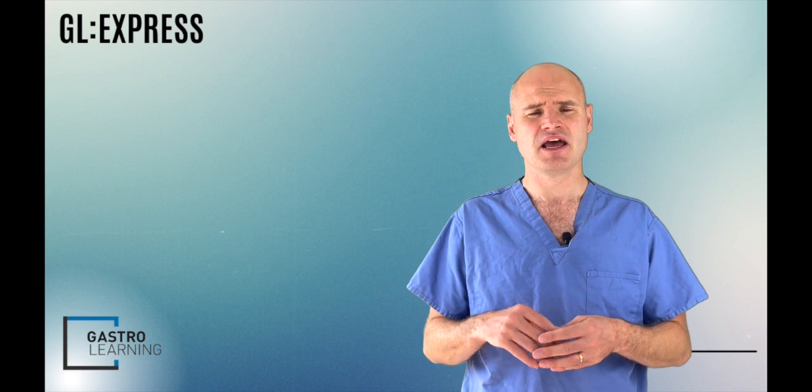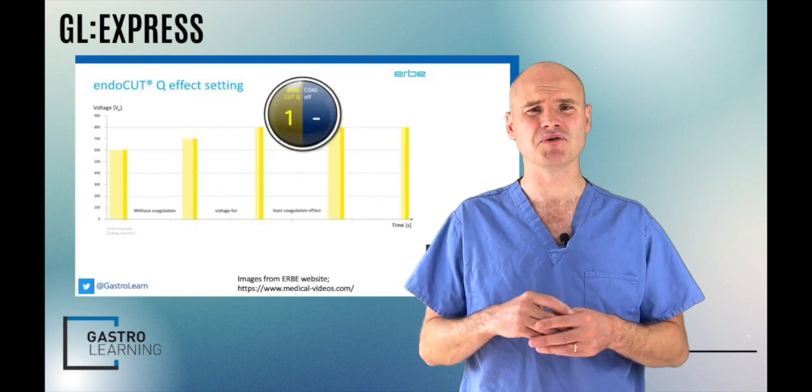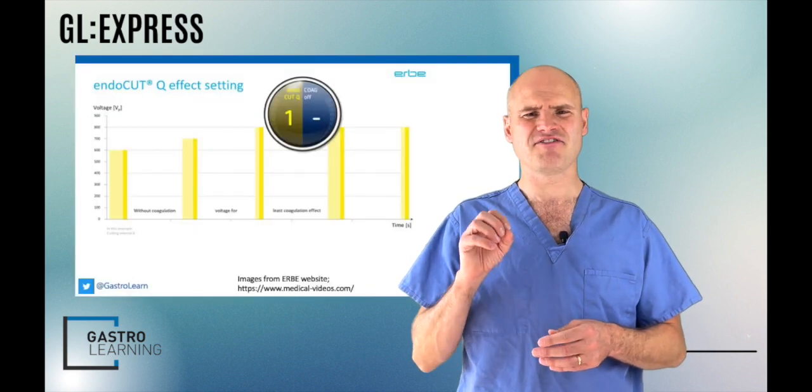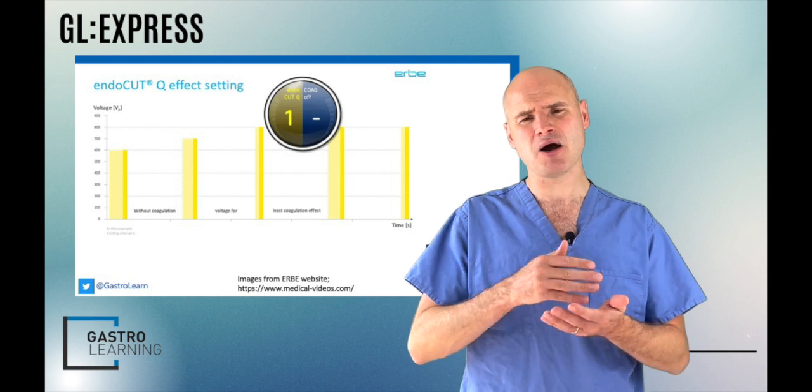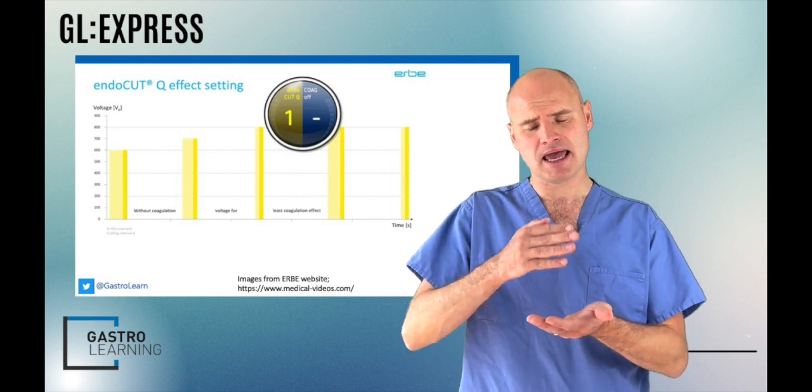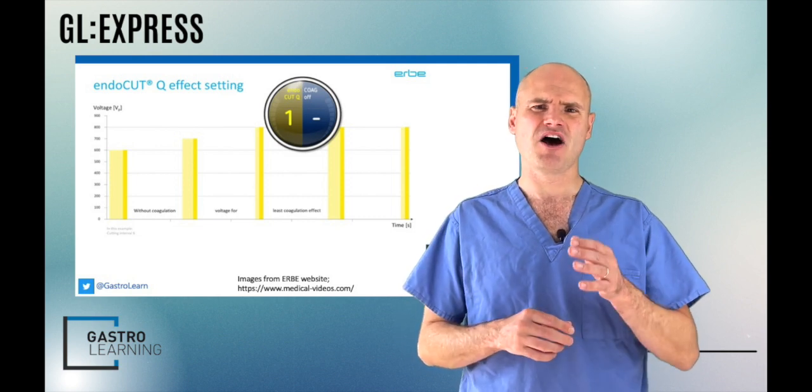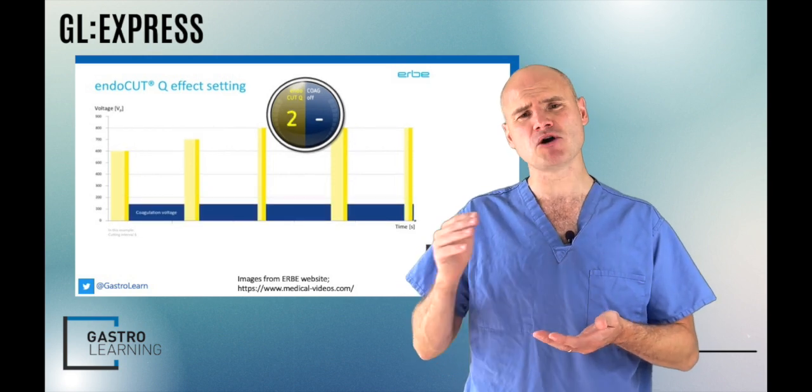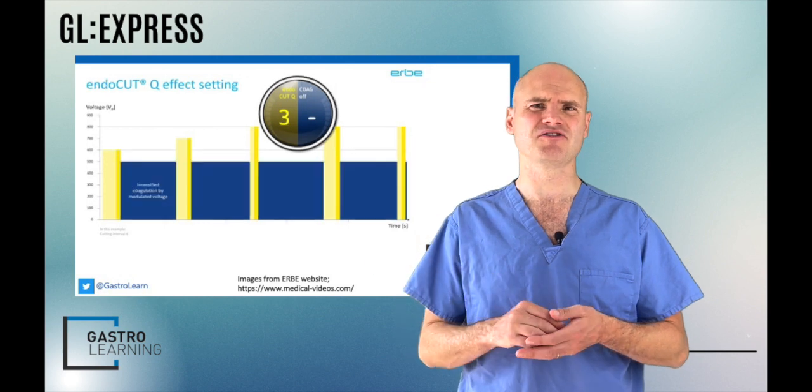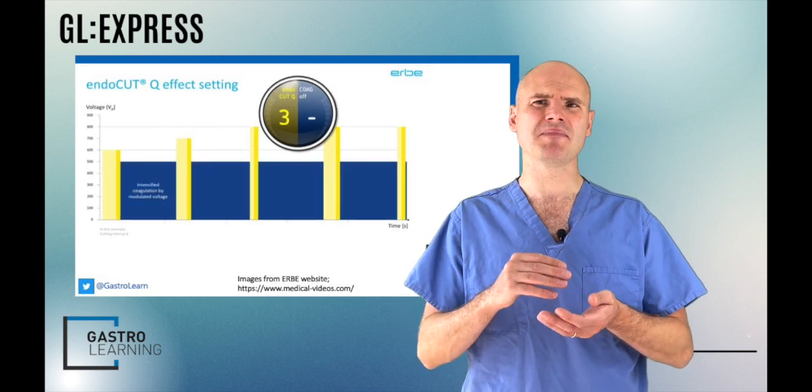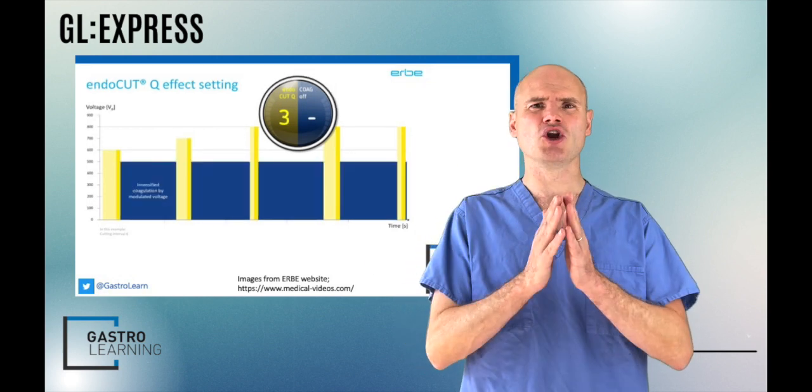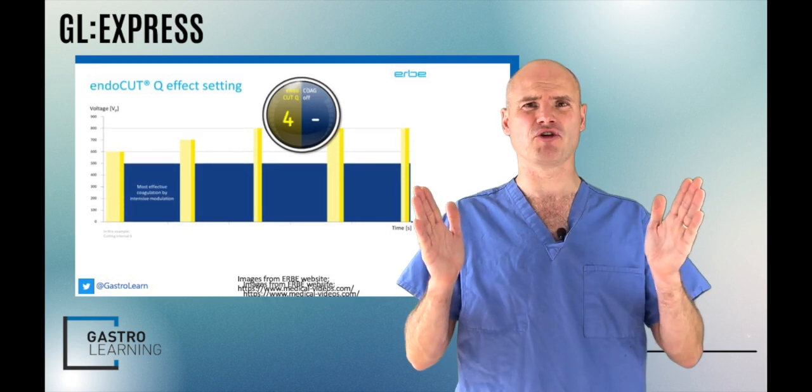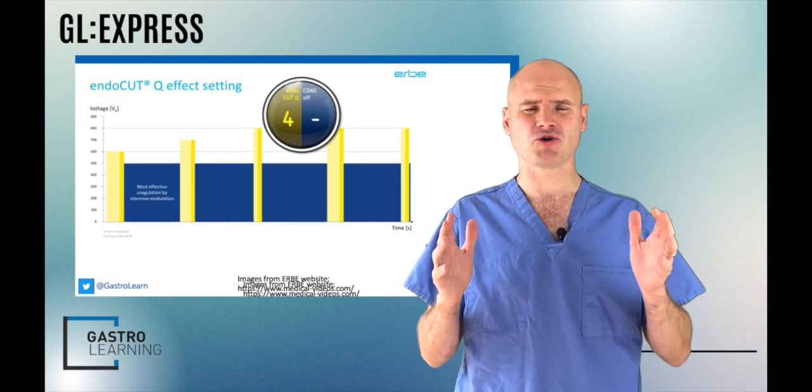Next thing you have to select is the effect. There are four different effect settings numbered one to four. The effect setting is you choosing how much coagulation you want there to be in between your cuts. Effect one has no coagulation in between the cuts, and effect four has the most coagulation. When I say most, I mean the amount of voltage, not the duration of coagulation. The duration is determined by the cutting interval I'm going to speak about later.